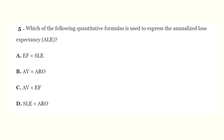Question 5: Which of the following quantitative formulas is used to express the Annualized Loss Expectancy, or ALE? The correct answer is D. Basically, ALE equals the product of SLE times the ARO - the Annualized Rate of Occurrence.